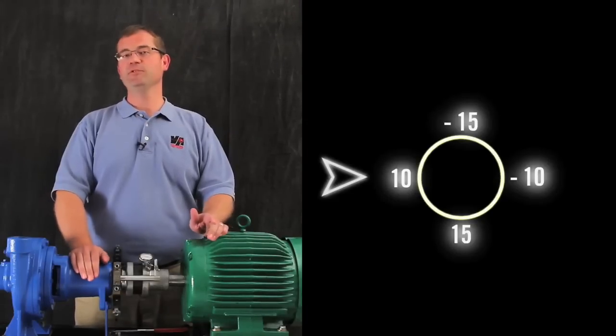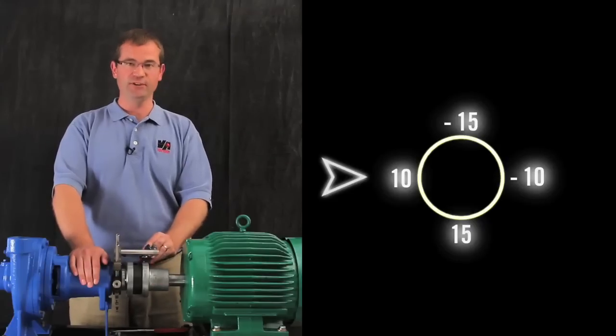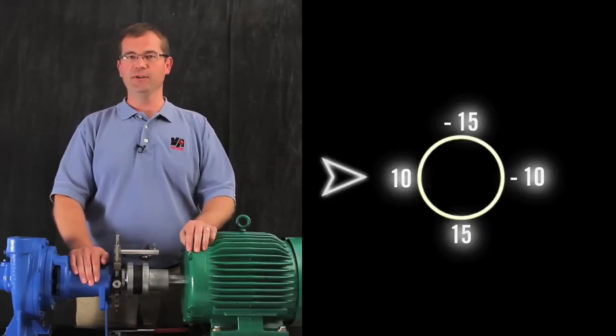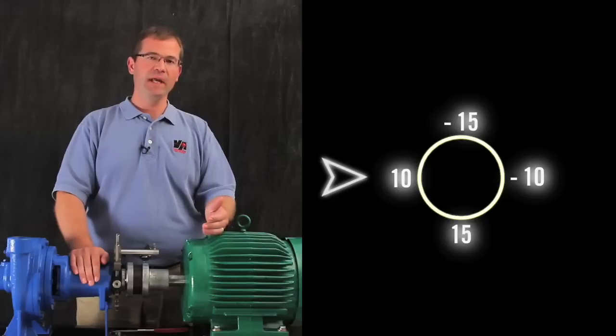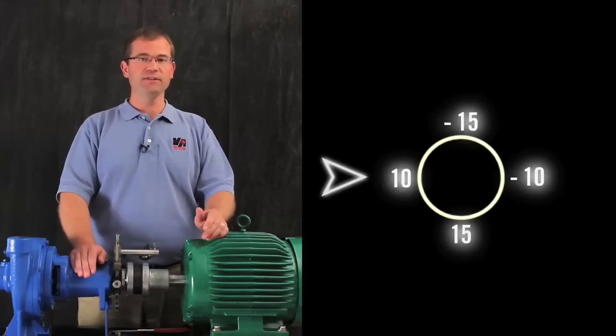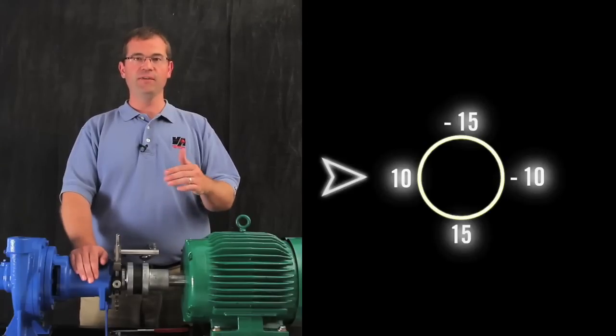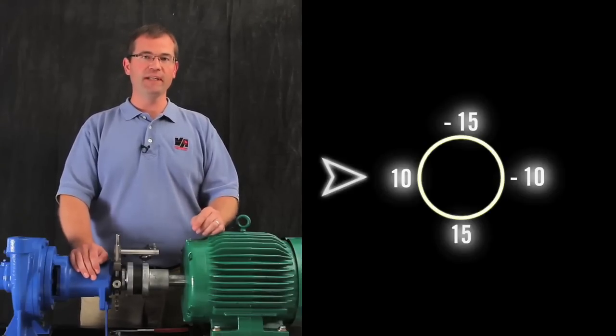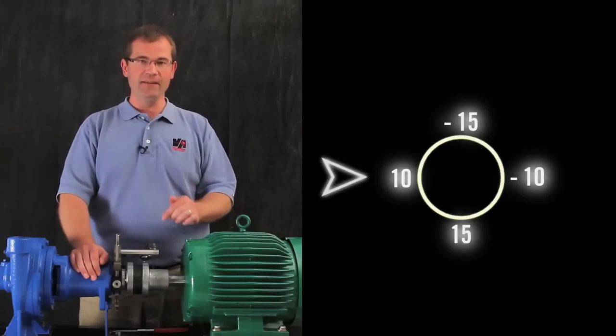So as I've just demonstrated, you can zero the indicators at any position, roll it 180 degrees, half the value, and you will then be reading true position. Regardless of the orientation of the indicators, you'll be reading true position in that direction.